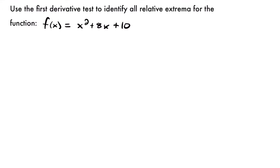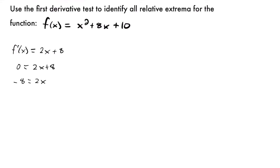So if we start by taking the derivative, we will have f prime of x is equal to 2x plus 8. And so now if we set our derivative equal to zero, we'll have zero equal to 2x plus 8. And now if we solve for x, that is going to be our critical value. We'll have negative 8 equals 2x, and if we divide both sides by 2, we'll have x equals negative 4.